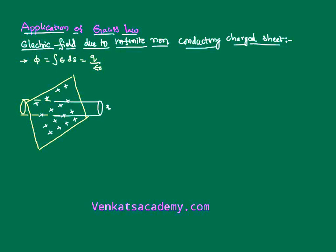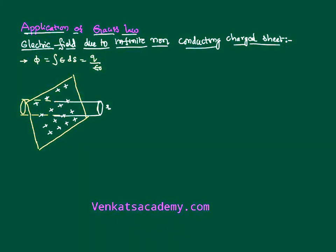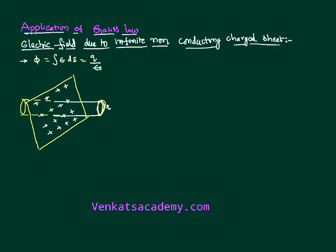Within the cylindrical Gaussian surface there are two parts: one is the circular surface, and another is the curved surface of the cylinder. Because the charge is positive, the electric field intensity at any point is always radially outward. Let us consider a small surface area at the curved surface — the surface area direction is always radially outward. So at the curved surfaces, E and dS are perpendicular to each other.